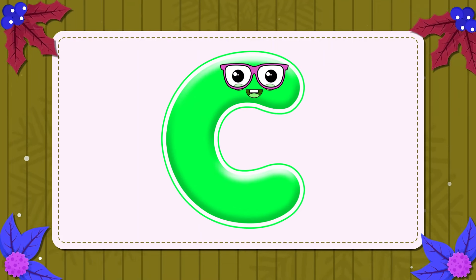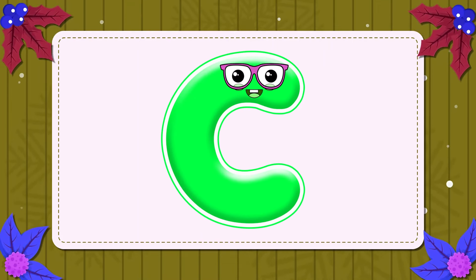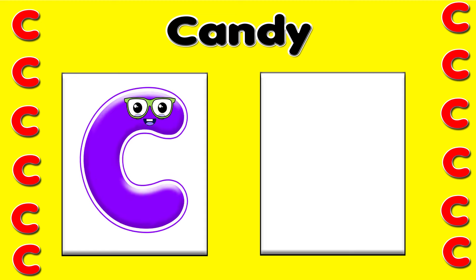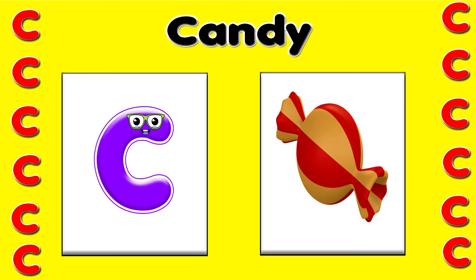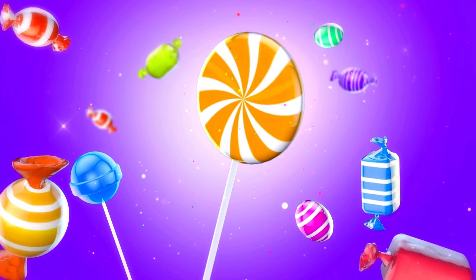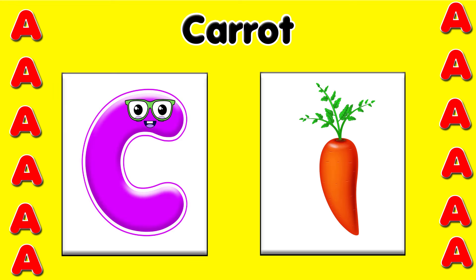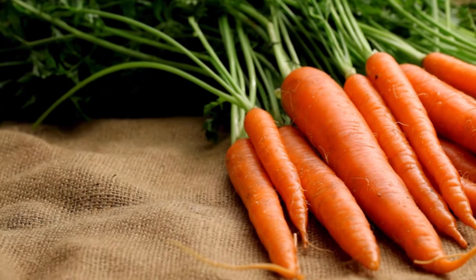C. This is the letter C. C is for candy — k, k, candy. C is for carrot — k, k, k.